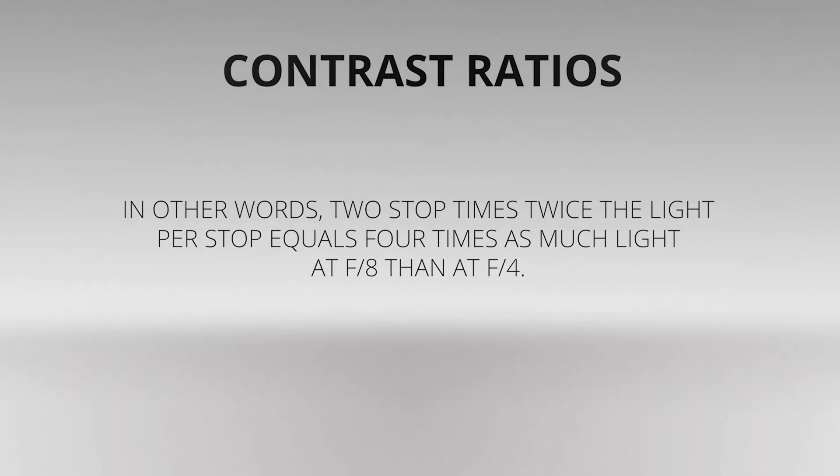Let's say you've grabbed a measurement from your key light of f8, then measured your fill light and got a reading of f4. This will lead you to a contrast ratio of 4 to 1, because there are two stops between f4 and f8, and each stop doubles the amount of light. In other words, two stops times twice the light per stop equals four times as much light at f8 than at f4.